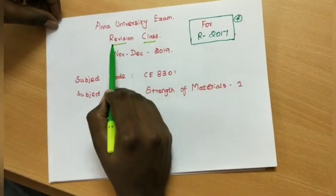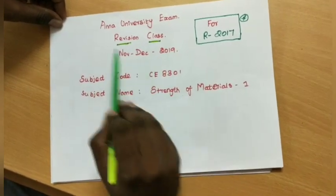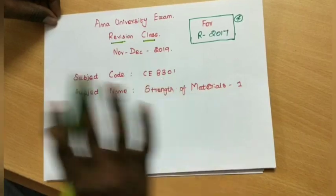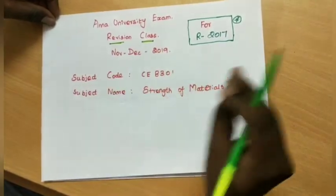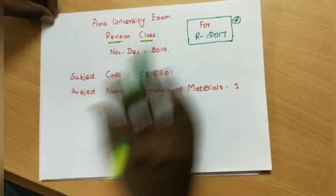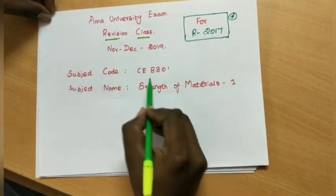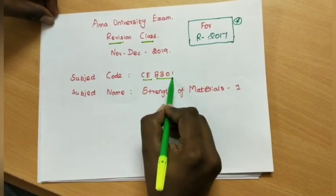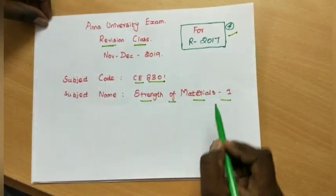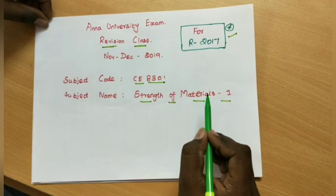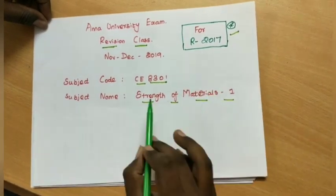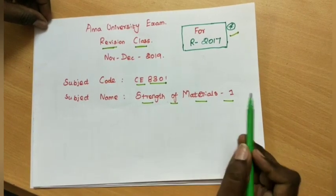I will have revision classes. This is not just one subject — it is a unified revision. What are the important questions? What kind of problems do you think? The first subject is CE8301, Strength of Materials 1 for the 2017 regulation. In the 2013 regulation it was Mechanics of Solids, but in the 2017 regulation it is Strength of Materials 1 and Strength of Materials 2.